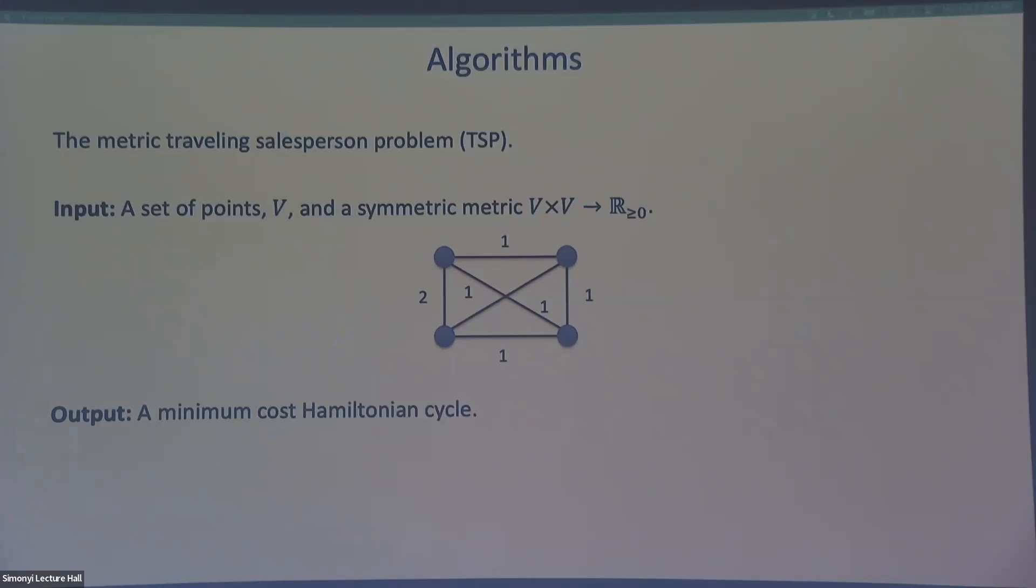And your goal is to find a minimum cost Hamiltonian cycle, so the cheapest set of edges that has a cycle containing every vertex. And this model has a lot of natural problems. For example, if you're at home and you want to visit three locations to do errands and minimize your distance, then this will tell you how to do that. Unfortunately, the problem is this is the optimal solution for this instance. It has cost four.